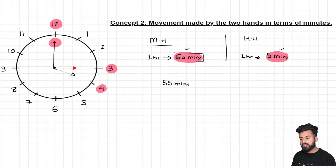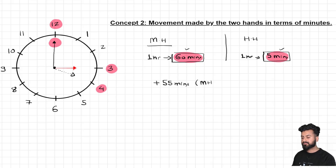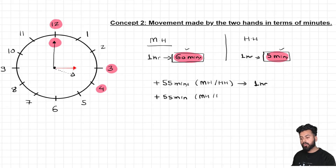How much did the minute hand cover in one hour? 60 minutes. How much did the hour hand cover in one hour? Only 5 minutes. So the difference is 55 minutes. We can write this as: the minute hand gains 55 minutes over the hour hand in one hour of time, or equivalently, 55 minutes are gained by the minute hand over the hour hand in 60 minutes.